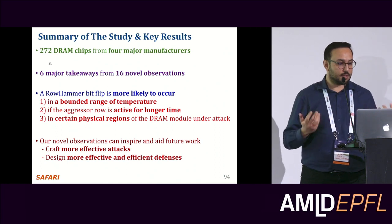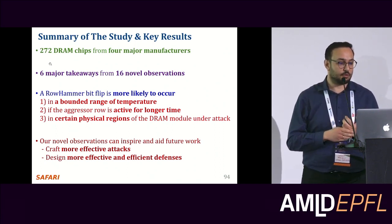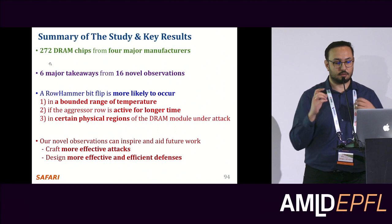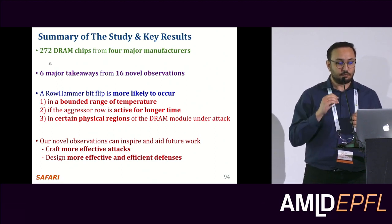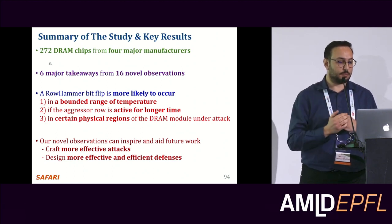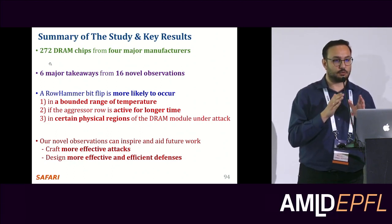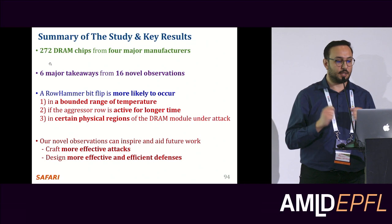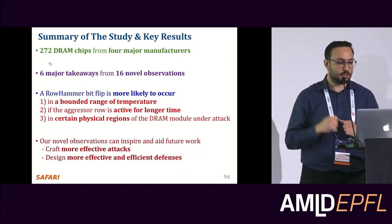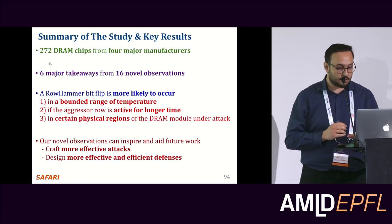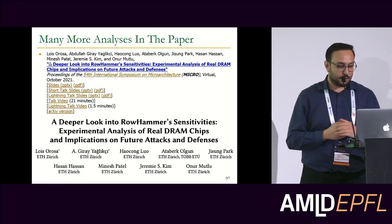Three key takeaways from this paper: First, a Rowhammer bit flip is more likely to occur in a bounded range of temperature — it's not that you simply increase temperature and it gets more vulnerable. Second, if instead of hammering with back-to-back activations and precharge you let your aggressive row stay active a bit longer, you can increase the impact of your Rowhammer attack. Third, certain physical regions are more vulnerable than others.